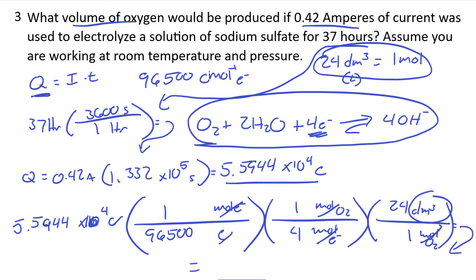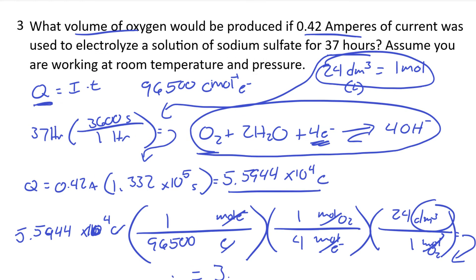So we'll go ahead and write that out. This comes out to be, first we divide the 5.5944 times 10 to the 4 divided by 96,500, divide that by 4, and then multiply that by 24. It's 3.47 so we can round out to 3.5 liters. So 3.5 liters of oxygen is what we will have after 37 hours of doing this. Not a whole lot. But it's pretty simple. Most of it's just knowing this equation, knowing this unit, and then just plugging in, keeping track of your units. If you are very good at this whole dimensional analysis setup, it really does make your life so much easier.